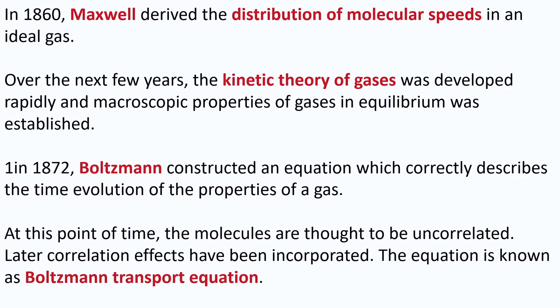Around the same time, Maxwell derived the distribution of molecular speeds in an ideal gas. There are slow-moving molecules and fast-moving molecules, and Maxwell stated that they are distributed in a Gaussian sense — that is, the velocity distribution is bell-shaped. There is a most probable value around which most molecules' velocities are distributed, while very slow and very fast speeds are rare.